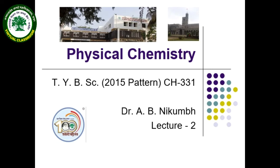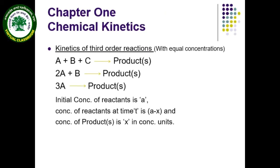Welcome back. In our first lecture we saw a recapitulation of chemical kinetics. Today we consider the next part: kinetics of third-order reactions. The order of such reactions is three, represented by the small letter n, and there are three different ways in which reactions proceed with third order.